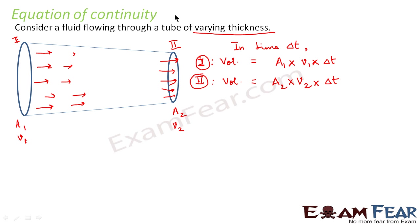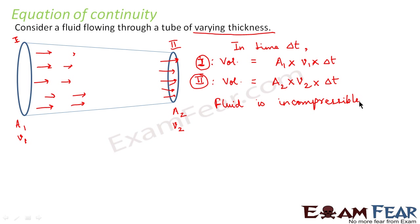When we talk of the equation of continuity, we assume that the fluid which is flowing inside is incompressible. This is a condition for the equation of continuity. Incompressible means the volume of the fluid does not get reduced even if we apply pressure — that is, on applying pressure, the volume does not get reduced.